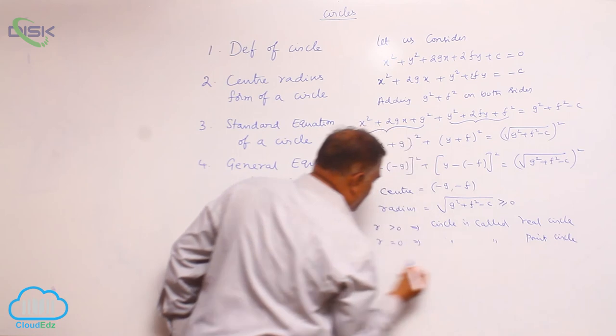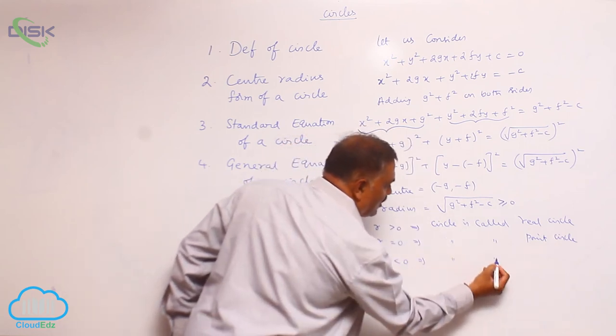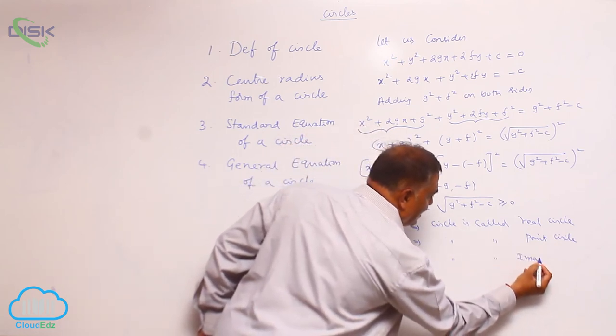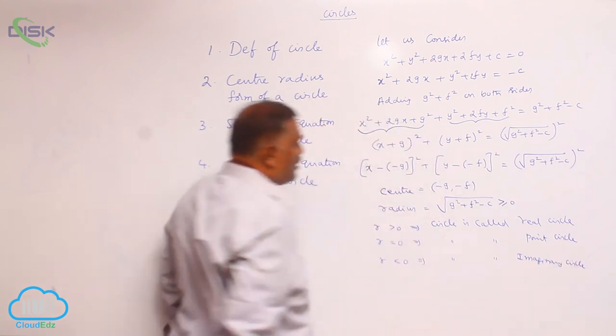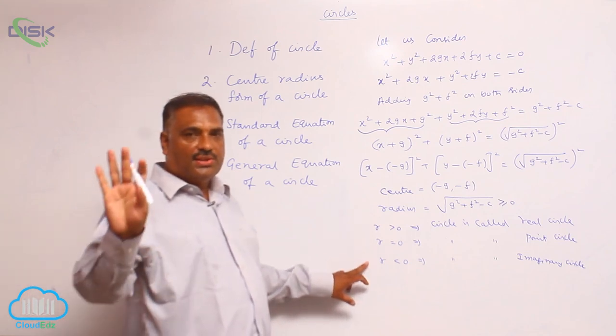Then r less than 0, circle is called imaginary circle. So r greater than 0, r equal to 0, r less than 0.